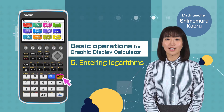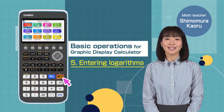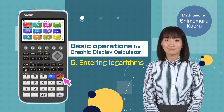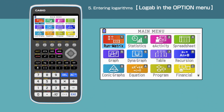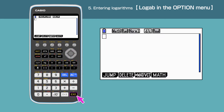Switch on your calculator by pressing the AC button. Press the menu button to open the main menu. Press 1 to enter the Run Matrix menu, or move the cursor and highlight Run Matrix, then press Execute.